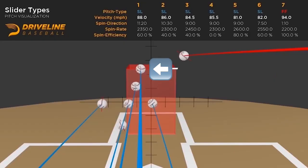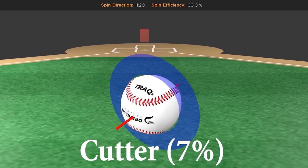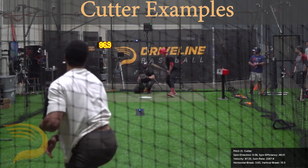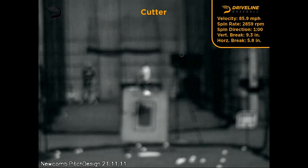Let's work our way from the top of the movement chart to the bottom, starting with the cutter. Among 2021 classified sliders, about 7% of them came in with movement characteristics that resembled that of a cutter. On average, these pitches were thrown 87.5 miles per hour and had nearly three times the vertical break — 9 inches — relative to the horizontal. This means most of the active spin on this pitch consisted of backspin. Because this slider variant doesn't drop as much, it must be thrown harder to make up for the lack of downward action relative to a pitcher's fastball. That said, Clayton Kershaw and Robbie Ray have each won Cy Young Awards while featuring this type of slider, suggesting it's certainly not a death sentence so long as it is firm and commanded well.